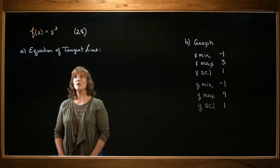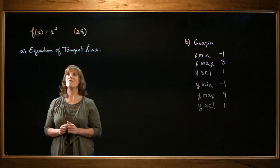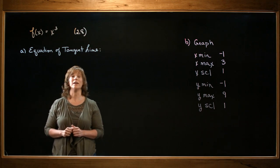First of all, we're going to be finding the equation of the tangent line to the curve f of x equals x cubed at the point (2,8).